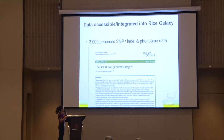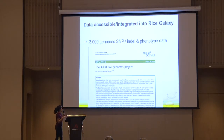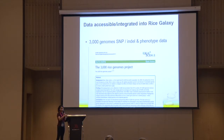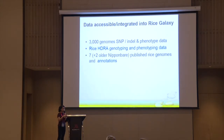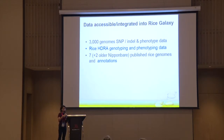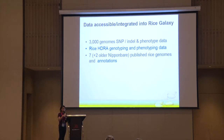Four years ago we published in GigaScience the 3,000 Rice Genomes Project, and a lot of people are very excited to use that dataset. But that's a lot of data, and a lot of people cannot use it because it's really very complex. So we have that in Galaxy — we put the data in Rice Galaxy so users can access it. If they just want a subset of the 3K BCF, or they just want to subset markers and samples, they can use it.